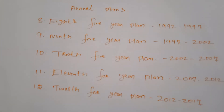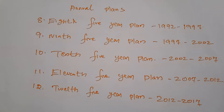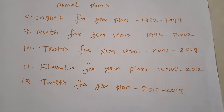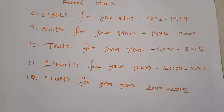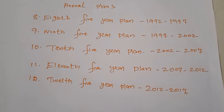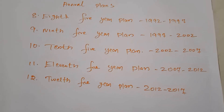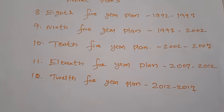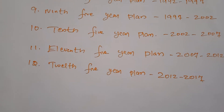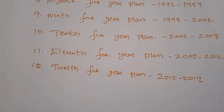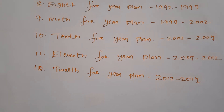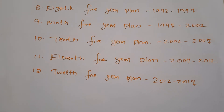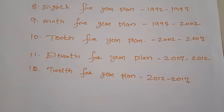The main objective of the first five-year plan was agricultural development of the country. After the first and second world wars, people in India were not self-sufficient in food grains. Since food is the basic necessity of life, the government decided to focus on improving agriculture. This plan was successful and achieved a GDP growth rate of 3.6 percent.